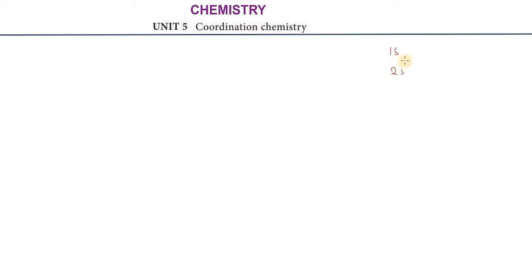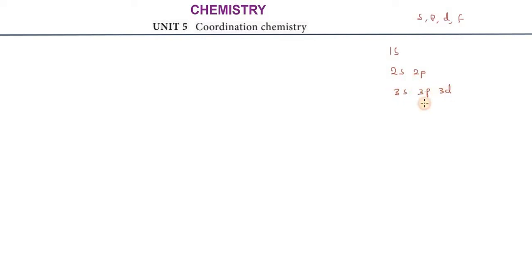The orbital filling order is: 1s, 2s, 2p, 3s, 3p, 3d, 4s, 4p, 4d, 4f. This is the sequence in which we fill the orbitals according to increasing energy levels.